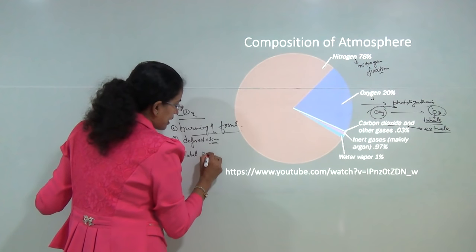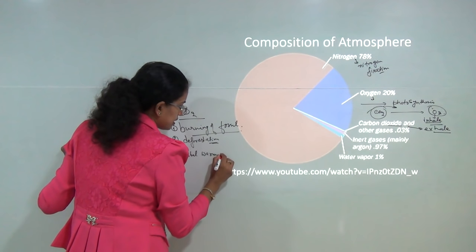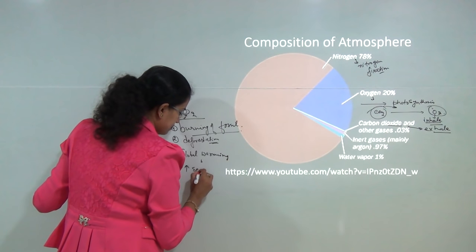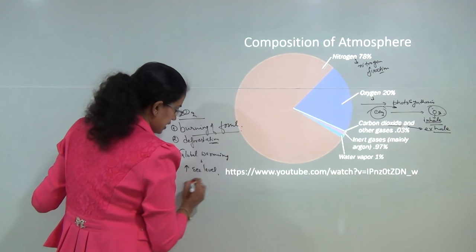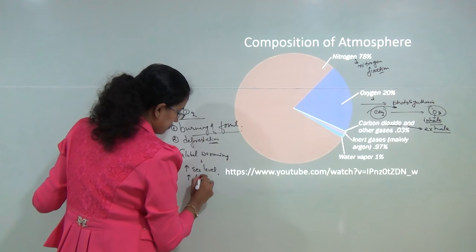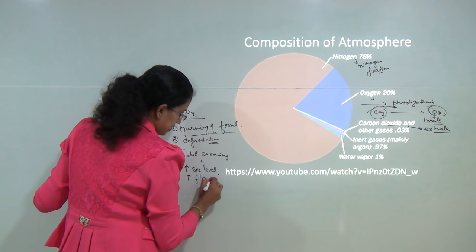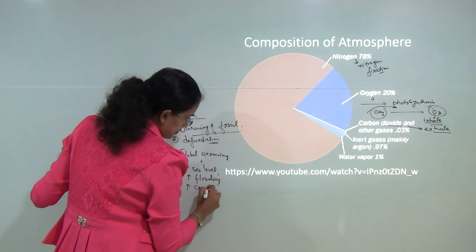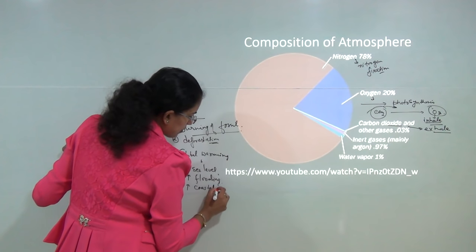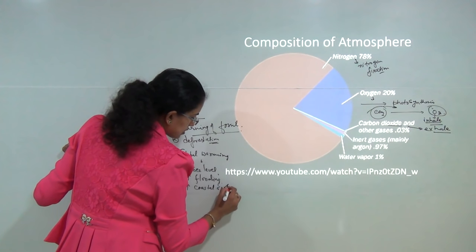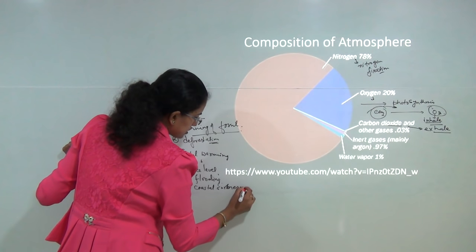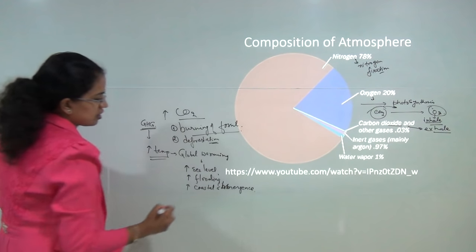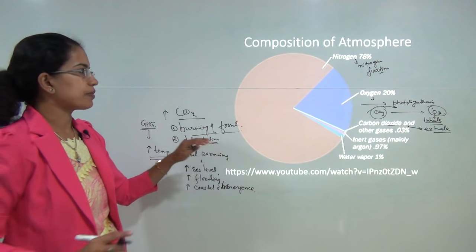These greenhouse gases lead to an increase in the temperature of the globe, and that is known as global warming. The impact of global warming can be seen as a rise in sea level, which would increase flooding activities and coastal submergence. These are some of the consequences faced because of global warming.